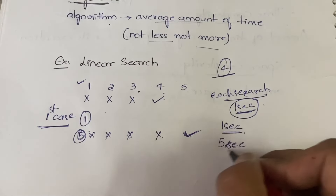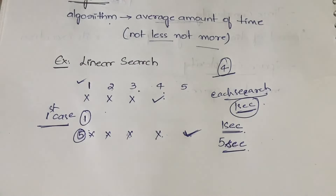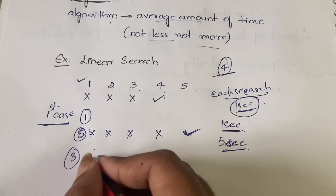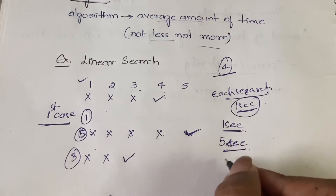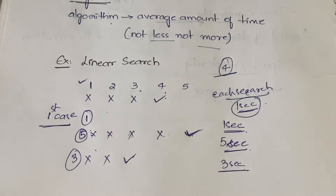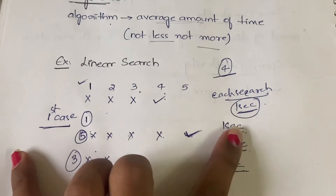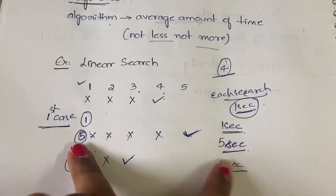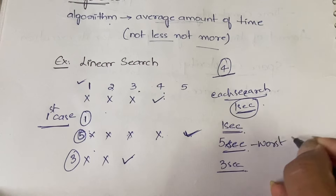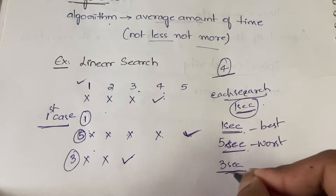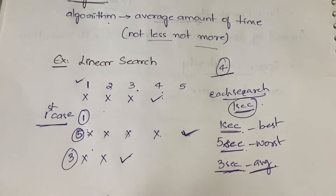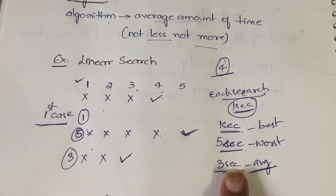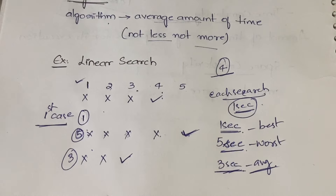If you search for element 3, it is not at position 1, not at position 2, but it is at position 3, taking 3 seconds. So: searching for element 1 (1 second) is the best case — minimum time, first attempt. Element 5 (5 seconds) is the worst case — maximum time. Element 3 (3 seconds) is the average case — not minimum, not maximum.